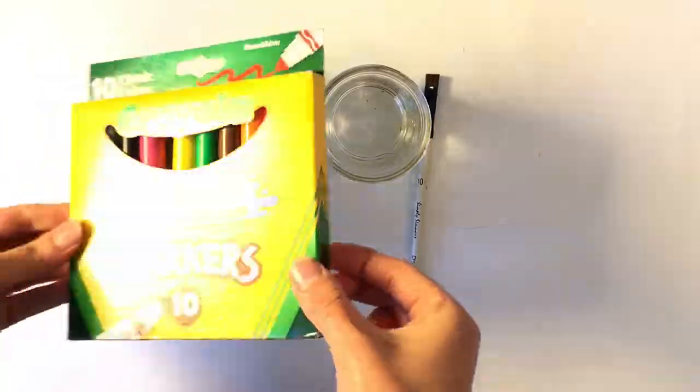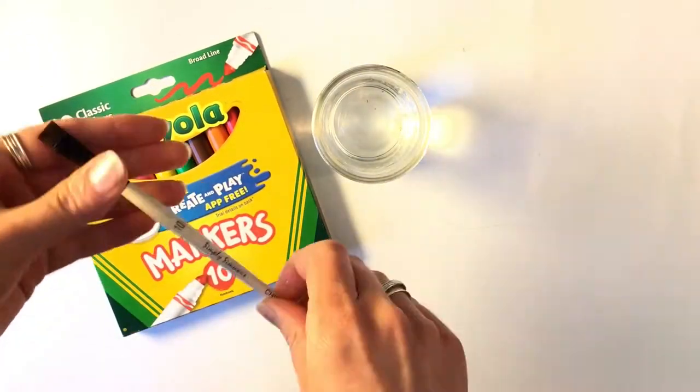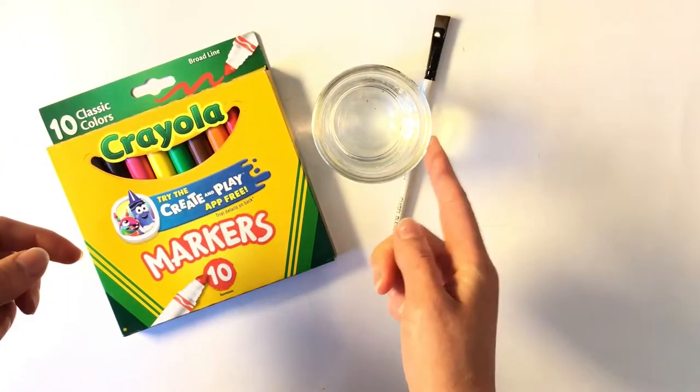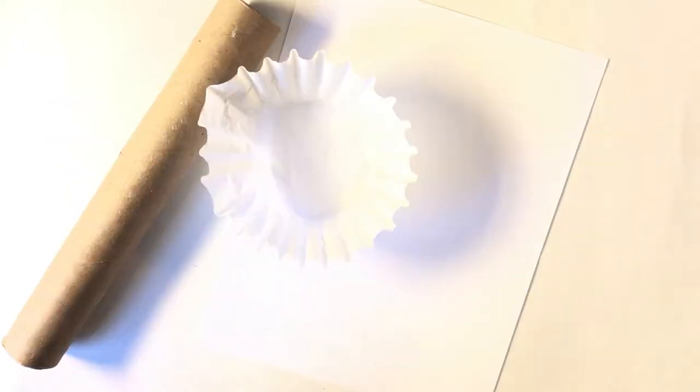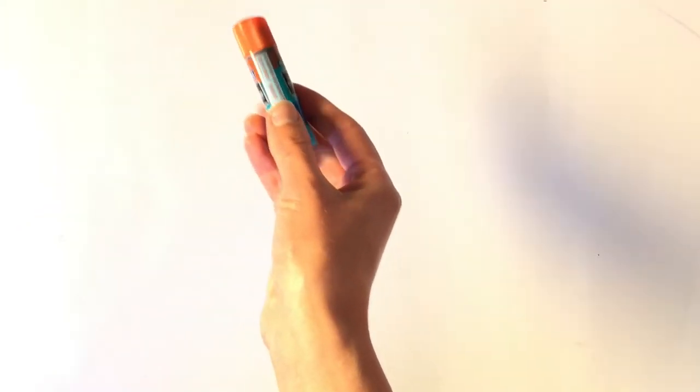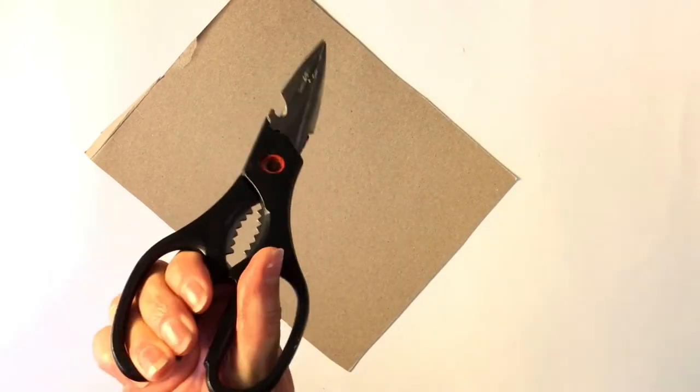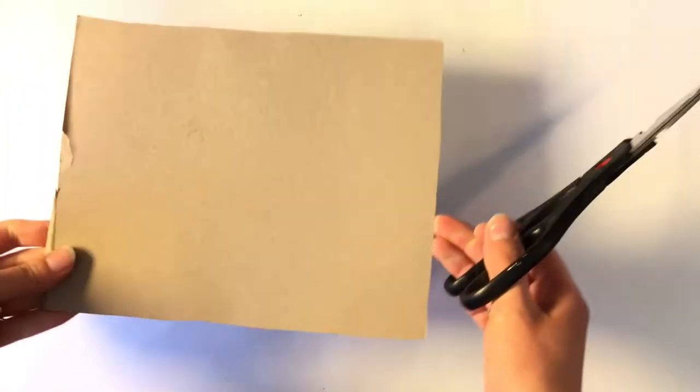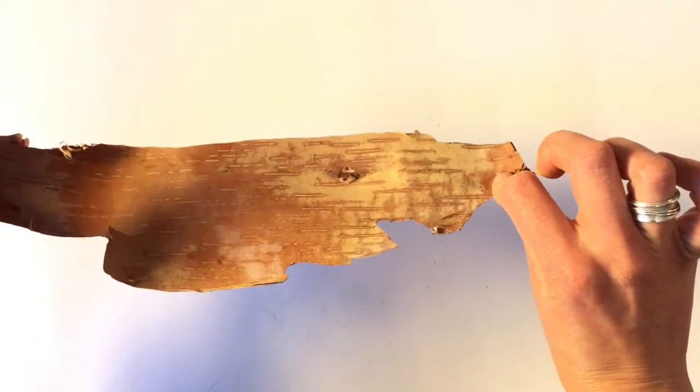For this activity you will need markers, a paintbrush, some water, a paper towel roll, coffee filter, paper, glue, scissors, and something to keep your table clean. As an optional supply I'm using birch bark.